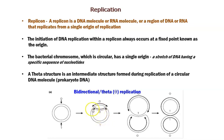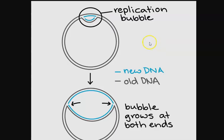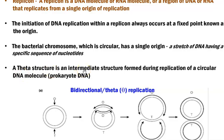At the same time, replication is taking place in both directions, and this region is referred to as the replication bubble. In the image, you can see the replication bubble, with the new strand shown in blue and the old strand shown in black. During bidirectional replication, this bubble extends in both directions along the double-stranded molecule. This theta structure is an intermediate structure formed during replication in prokaryotic DNA.